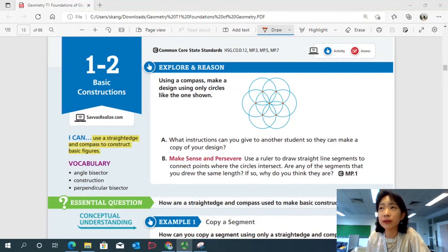Let's start with exploring reasoning. Using a compass, make a design using only circles like the one shown. If you look at the figure, how would you describe this pattern or this design? You might notice several circles, multiple circles in this design that are overlapped.